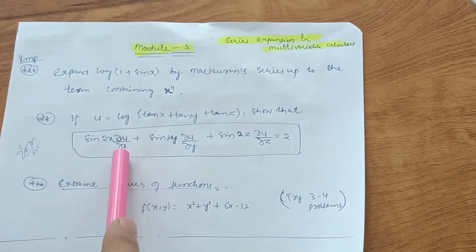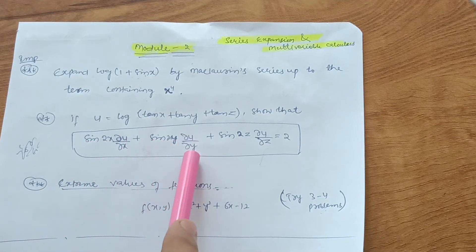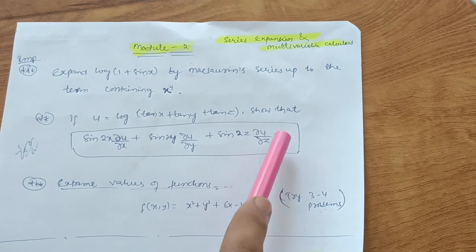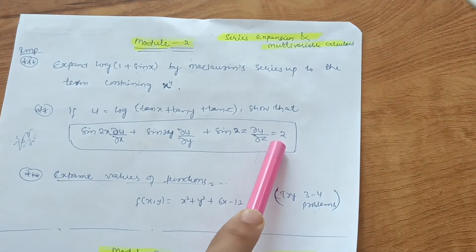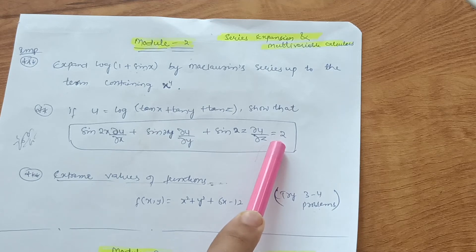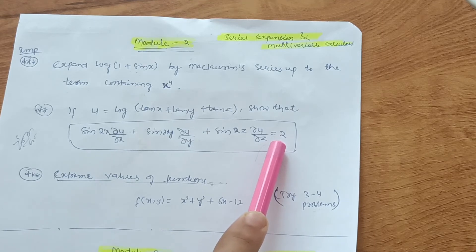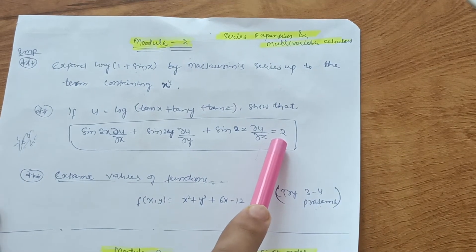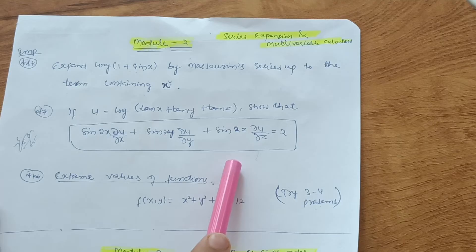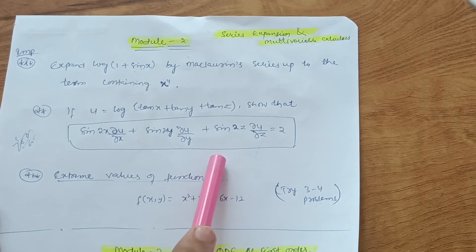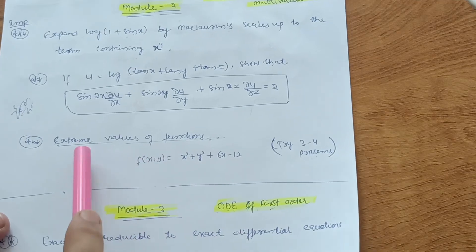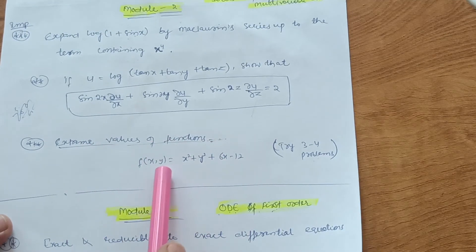Next, if u = log(tan x + tan y + tan z), show that sin(2x)·∂u/∂x + sin(2y)·∂u/∂y + sin(2z)·∂u/∂z = 2. These are derivation-based questions — just three or four derivations to focus on. It is very simple to cover derivations from an exam point of view, especially since few days are left for the examination and backlog students lose interest, so derivations are easier to cover than problems.